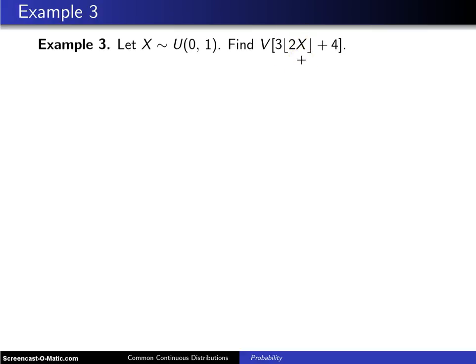So to begin with, we know that the random variable X has a uniform distribution between 0 and 1.